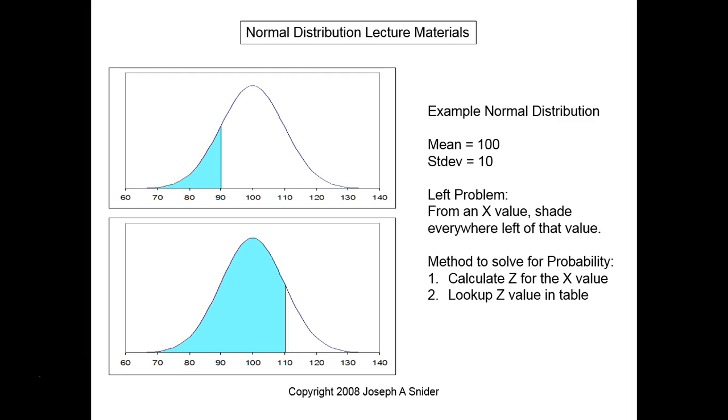Here's an example of calculating in what I call the recipe or formulaic way of doing it step by step. It never changes when you have a left kind of shading, or I call it a left problem. You have two steps: the method to solve for the probability is calculate Z for the given X, then look it up in the table, and that's your probability. You're done. So left hand problems are the easiest.